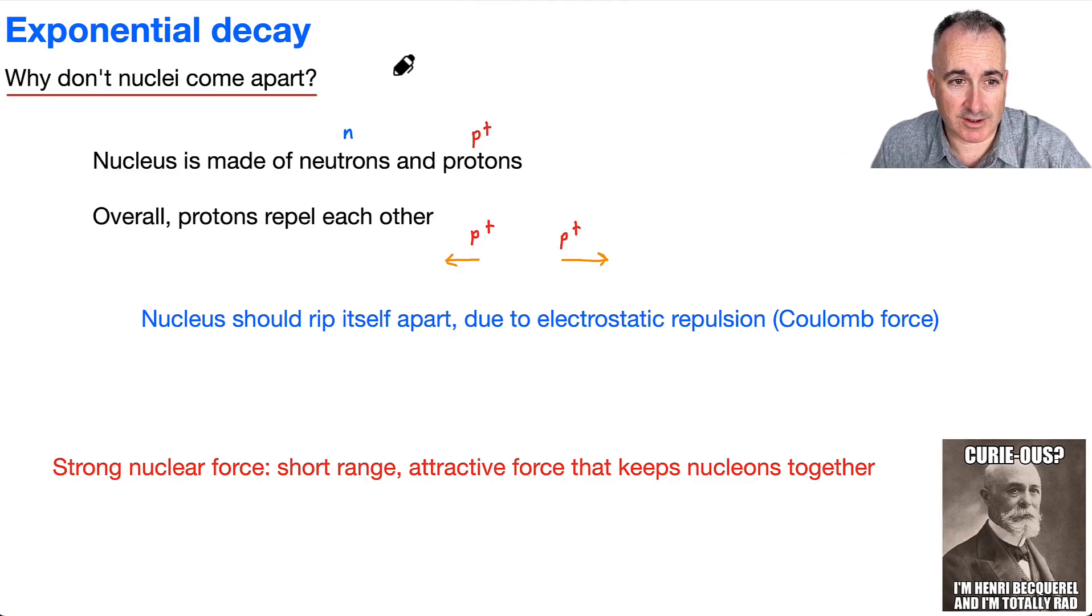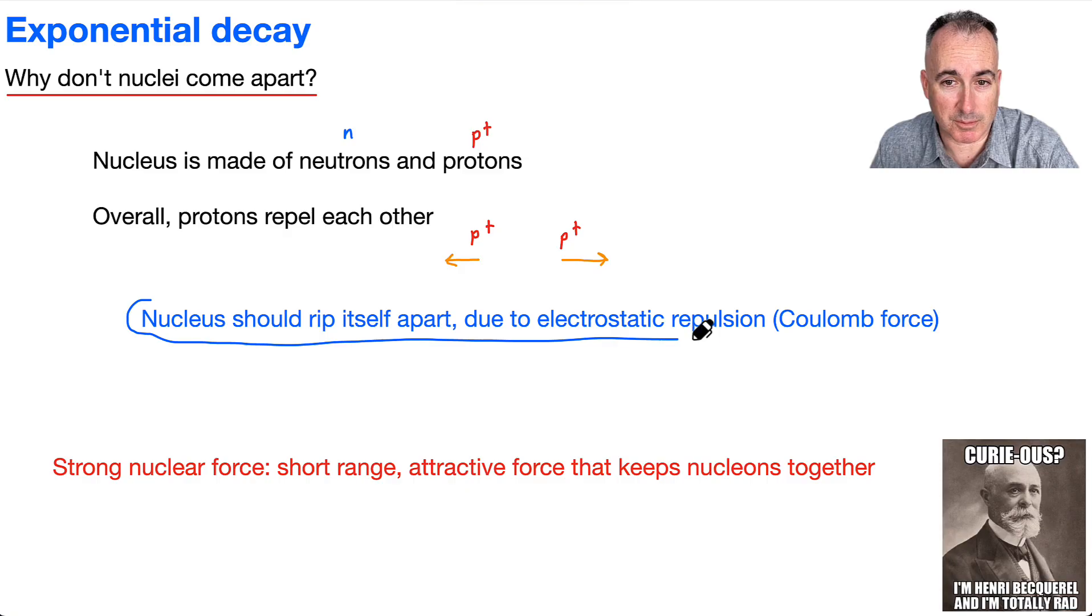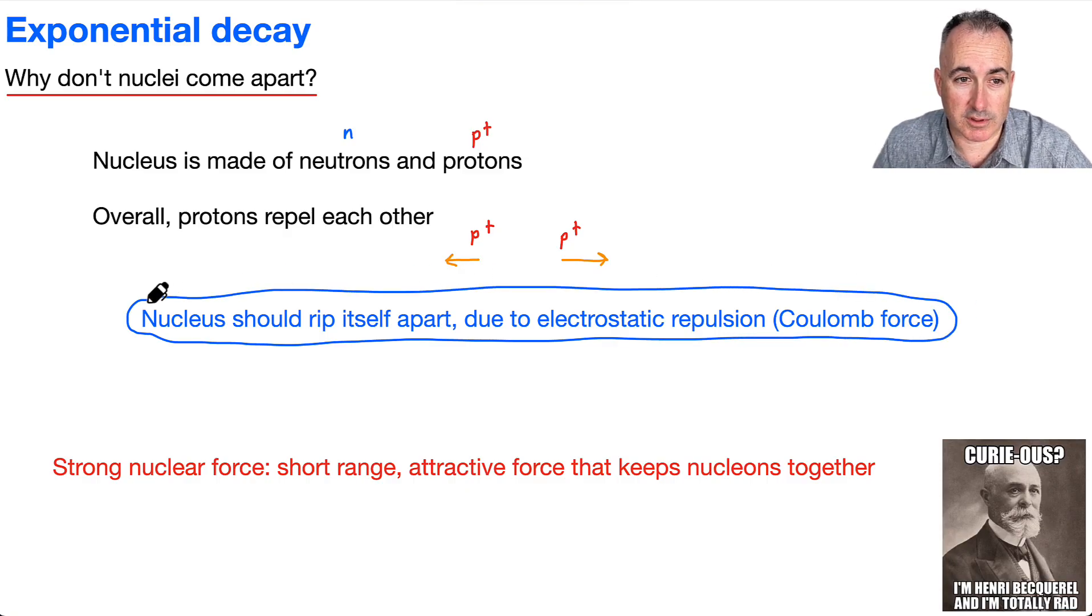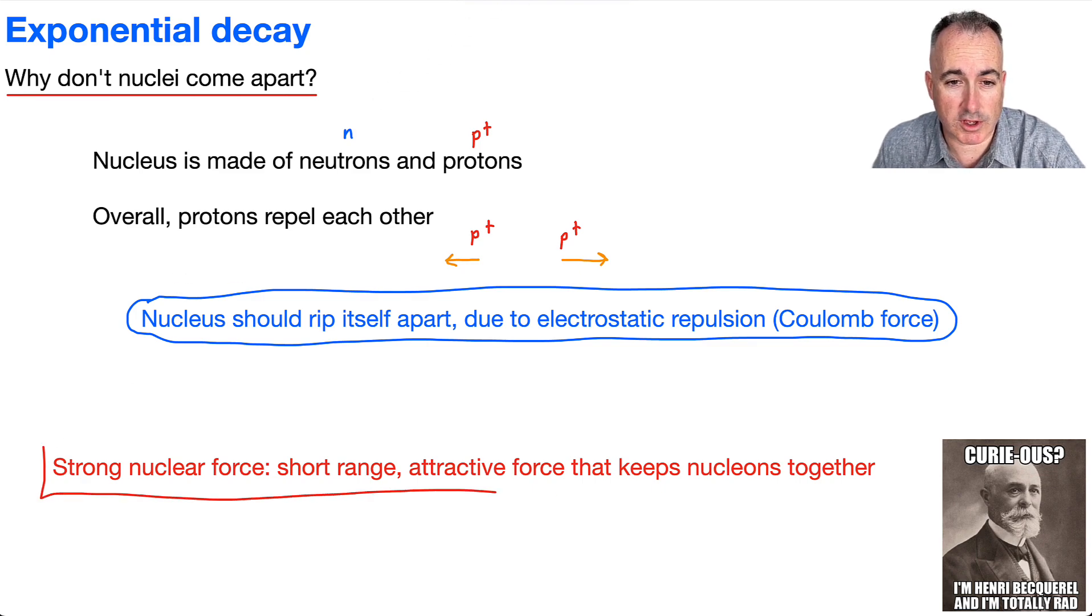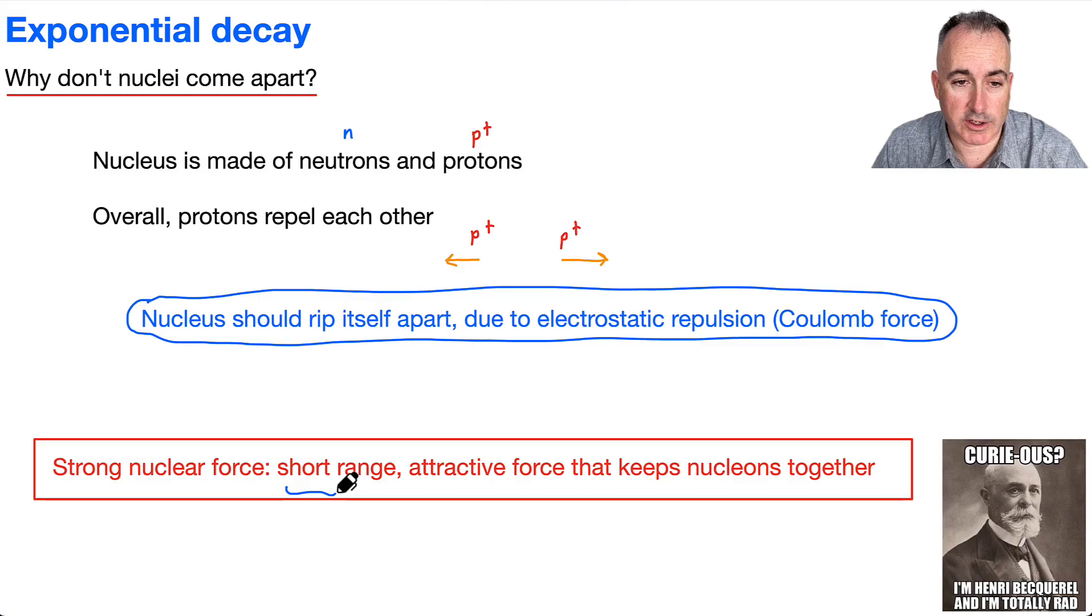This is a good question: the nucleus should rip itself apart because of this electrostatic repulsion, otherwise known as a Coulomb force. So what's keeping them together? We have this answer actually. We know there's this thing called a strong nuclear force. It is short range, which means it acts on a very small distance, and it's attractive because it keeps everything together. It's like the glue that keeps everything together.